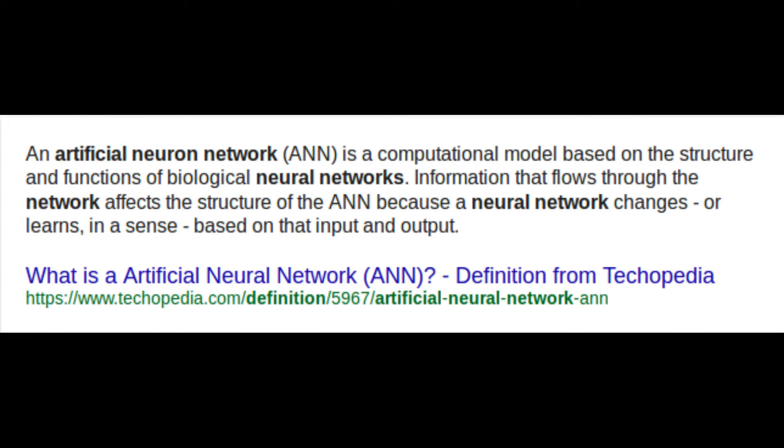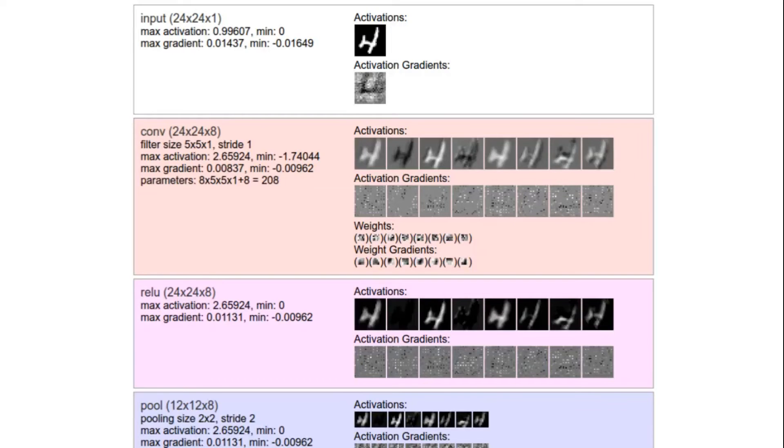A neural network is a computational or mathematical model based on the structure and functions of biological neural networks. Information that flows through the network affects the structure of the neural network because a neural network changes, or learns, in a sense, based on that input and output. All neural networks have a purpose, from identifying handwriting to creating novel music based on music that you give the neural network.